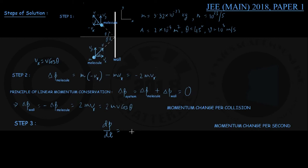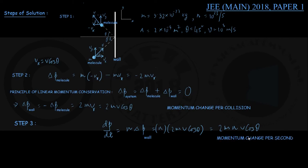So you can write dP/dt = n × ΔP for wall, that is n × 2mV cos θ, giving me 2m × n × V × cos θ. I am writing everything in symbols. We will put the data in the last step.